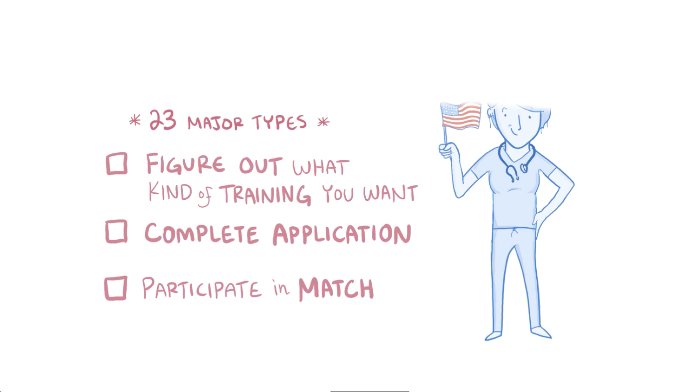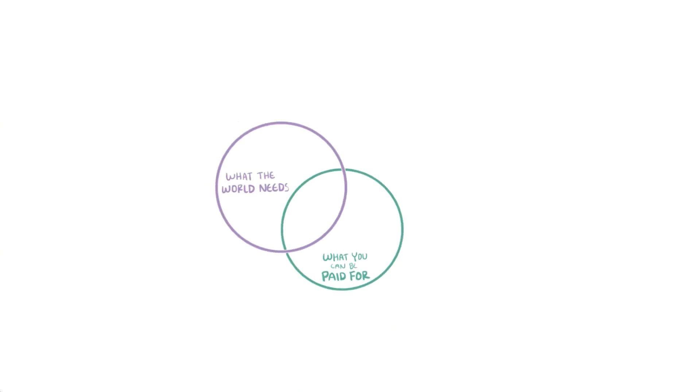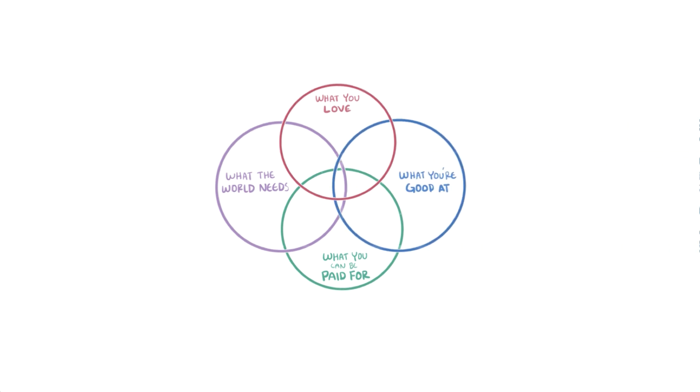One way to think about any career is to think about the intersection of four goals: what can you be paid for, what does the world need, what do you love, and what are you good at?